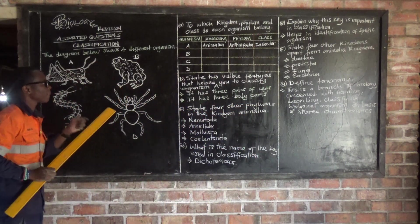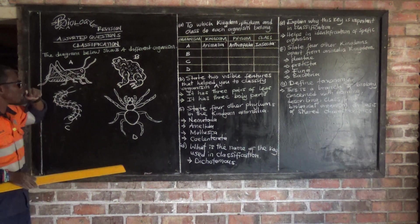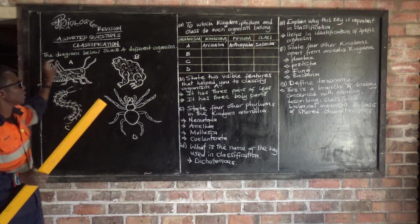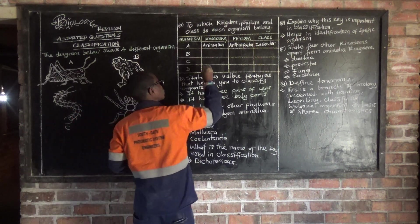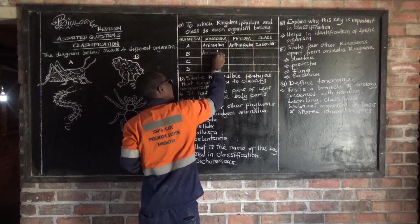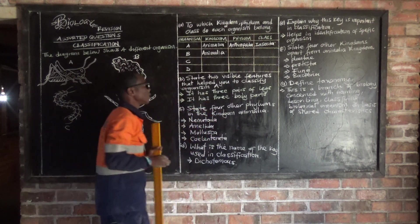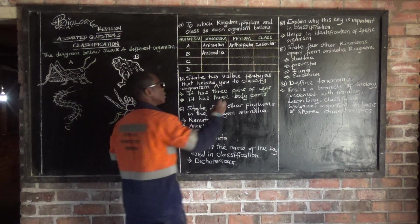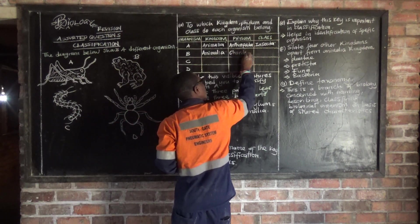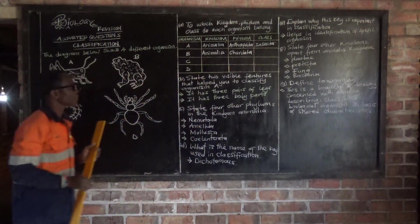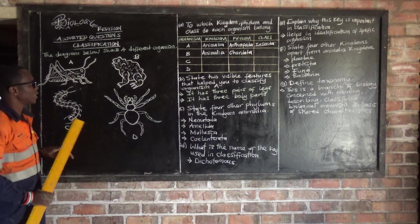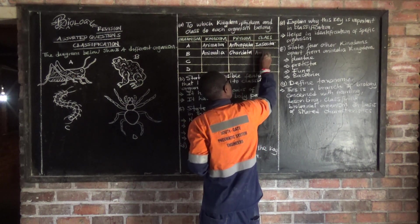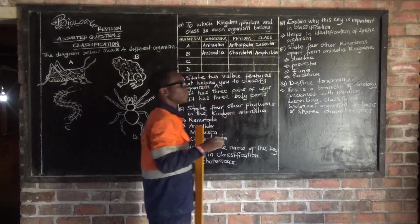Let's look at organism B. Organism B — this is a frog. They want us to identify the kingdom to which the frog belongs. The frog also belongs to the Animalia kingdom. To which phylum does this frog belong? The frog belongs to a phylum called Chordata. Then to which class does the frog belong? The frog belongs to a class which we call Amphibia.